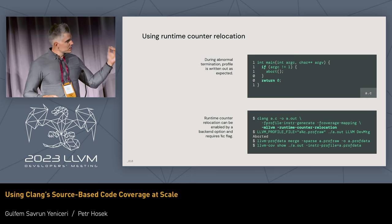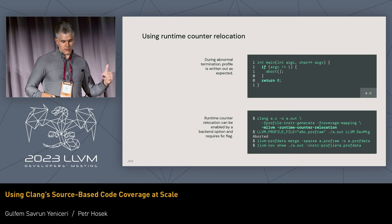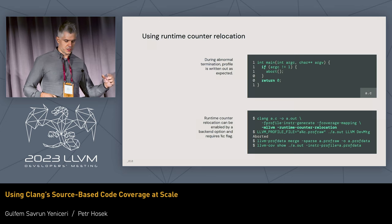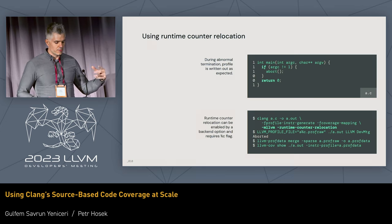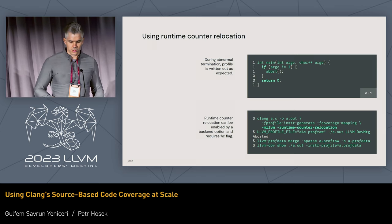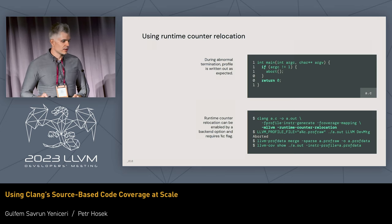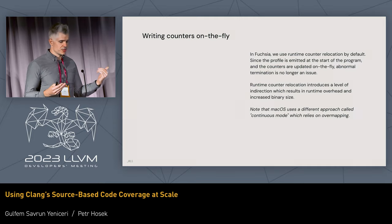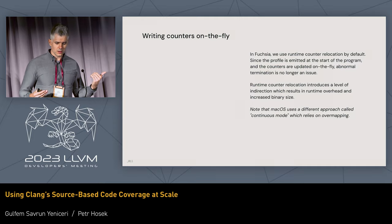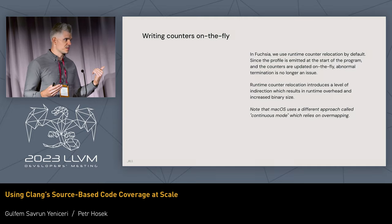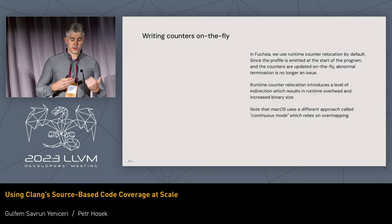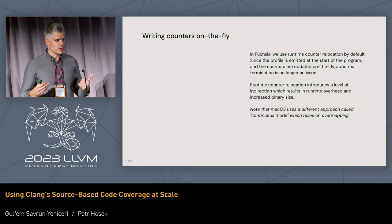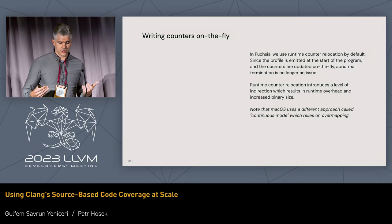Here's the same example with runtime counter relocation enabled — currently done through a backend option — and we get the correct counters. In Fuchsia, we actually use this by default; you don't have to specify any flags. It's been working great: we no longer have any missing counters.